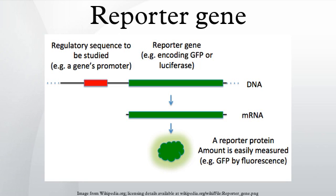Promoter assays: reporter genes can be used to assay for the activity of a particular promoter in a cell or organism. In this case there is no separate gene of interest; the reporter gene is simply placed under the control of the target promoter and the reporter gene product's activity is quantitatively measured. The results are normally reported relative to the activity under a consensus promoter known to induce strong gene expression. A more complex usage of reporter genes on a large scale is in two-hybrid screening, which aims to identify proteins that natively interact with one another in vivo.